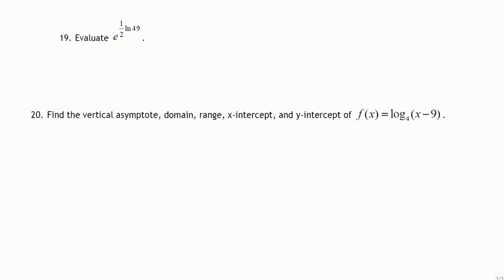Evaluate e raised to 1/2 times natural log of 49. Natural log means log base e, and we know that when we have e raised to natural log of some argument x, the actions of e and natural log cancel, giving just x. So we should be able to write this in the form e raised to natural log of 49, but this 1/2 is causing a problem.